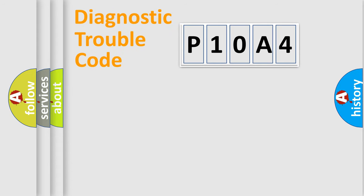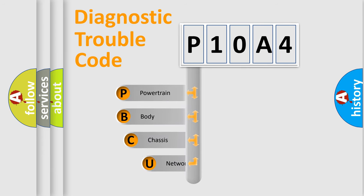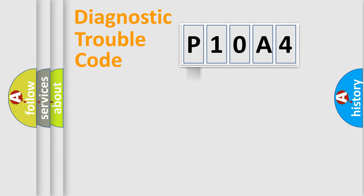Let's do this. First, let's look at the history of diagnostic fault code composition according to the OBD2 protocol, which is unified for all automakers since 2000. We divide the electric system of automobile into four basic units: Powertrain, Body, Chassis, and Network.